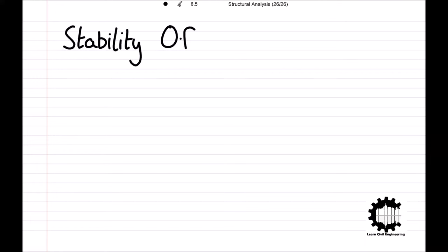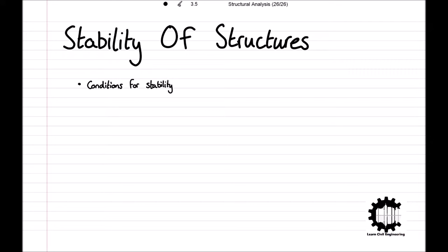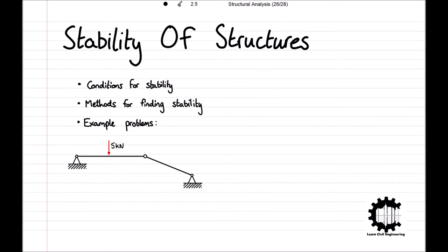Welcome everyone to this video by Learn Civil Engineering, where we will be learning about the stability of structures. To start, we will be defining the conditions for a structure to be determinate, indeterminate, or unstable, then moving on to covering methods for finding the degree of internal and external indeterminacy for structures in general, and we will finish by working through a couple of example problems implementing the newly learned theory.